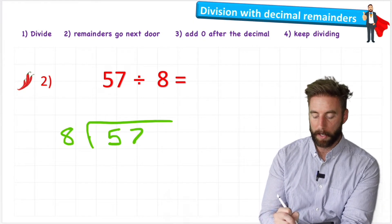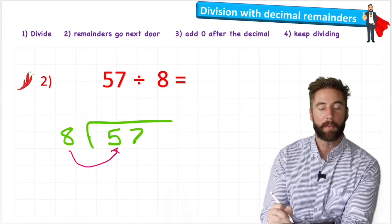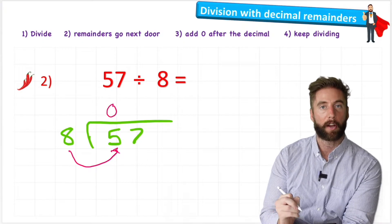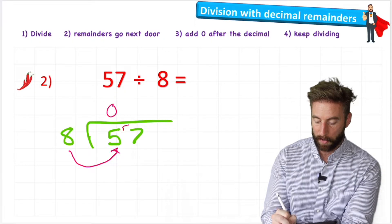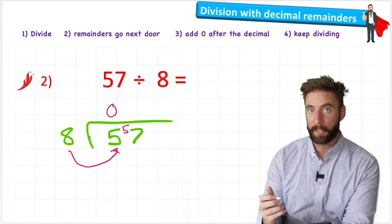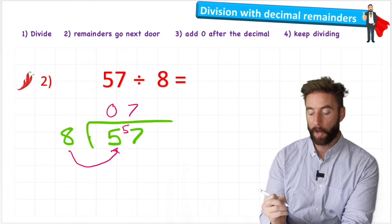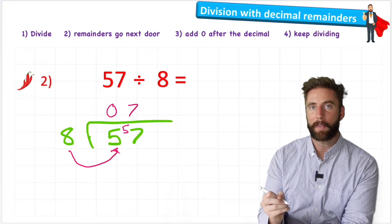And again, I can simply ask myself the first question, which is how many eights are there in five? Well, there'll be zero. And I'm going to roll my five across to the next door. And I ask myself how many eights are there in 57? Well, I can get to 56 by having seven groups of eight. And then I would have one left over. So we're going to do exactly the same thing again.